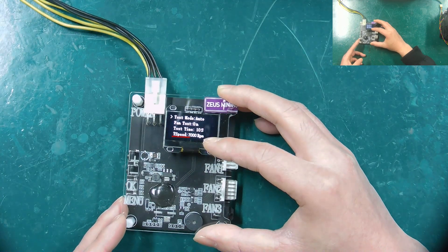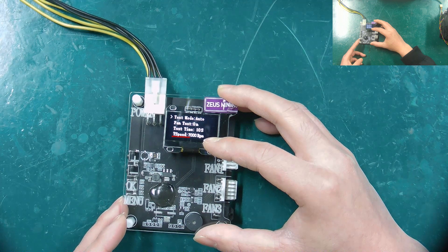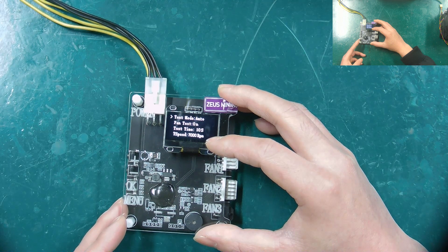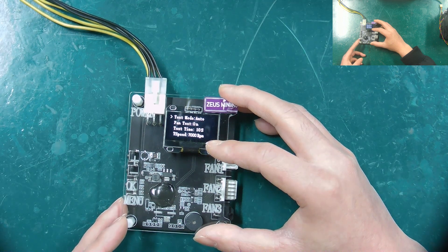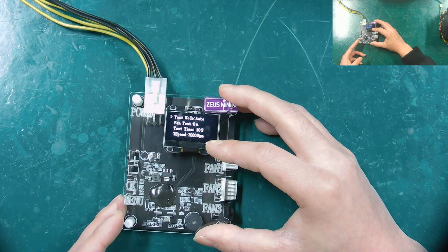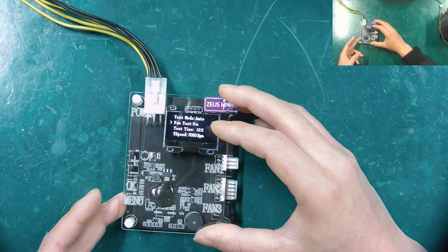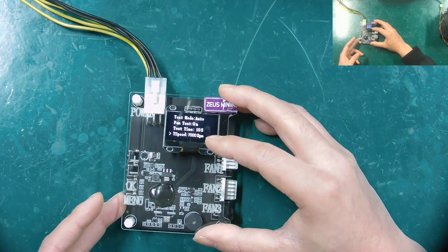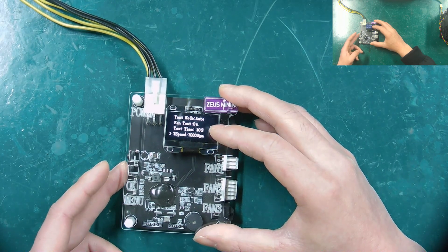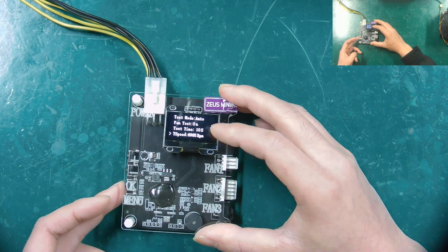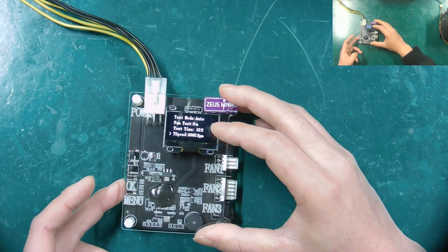T-speed represents the speed at which the fan is tested. If testing a fan with 7,000 RPM, it should be set to 7,000 RPM. If testing a fan with 6,000 RPM, it should be set to 6,000 RPM. After selecting T-speed by pressing the menu button, the speed can be set by holding down the minus or plus button, and then press OK to save the settings.